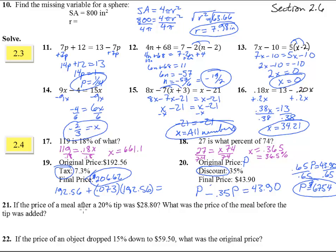Number 21. If the price of a meal after a 25% tip, so something, the original meal, I'll do M, increased by 20% of that meal price, it ended up being 28.80. What was the price of a meal before the tip was added? So if these two add together, that's 1.2M equals 28.80.